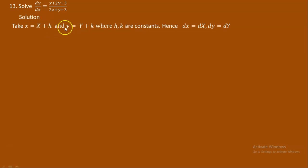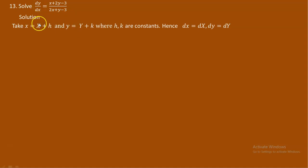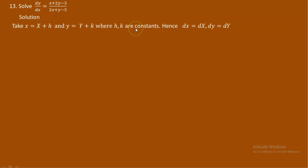Here, h and k are arbitrary constants. The main aim is to change the non-homogeneous equation to homogeneous form. We use the assumption: small x equals capital X plus h, and small y equals capital Y plus k, where h and k are arbitrary constants.